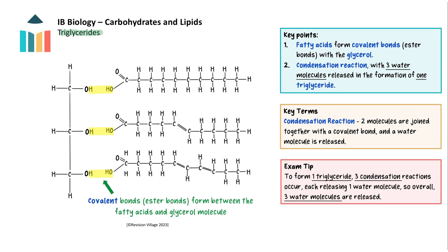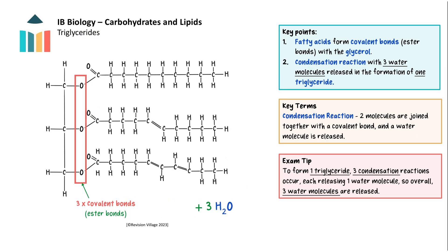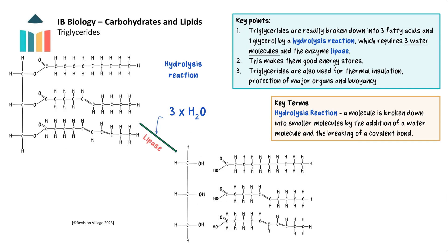Triglycerides are formed by the formation of covalent bonds between the fatty acids and glycerol via condensation reactions. During this reaction, three water molecules are released as the three fatty acids form covalent bonds, known as ester bonds, with the glycerol. A triglyceride can easily be broken back down into its constituent molecules by hydrolysis reactions, catalyzed by the enzyme lipase, making them good energy stores. As well as energy storage, triglycerides can be used for thermal insulation, protection of major organs and buoyancy in aquatic mammals.